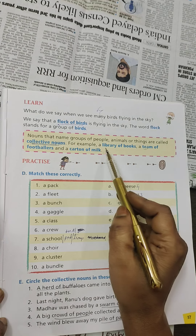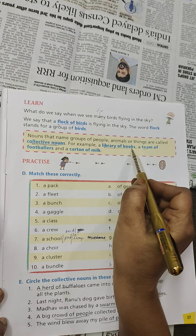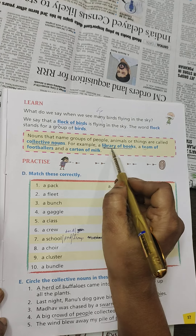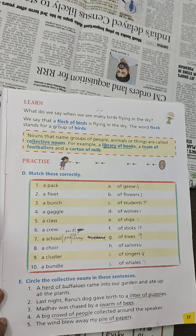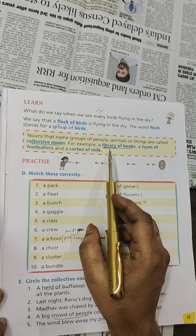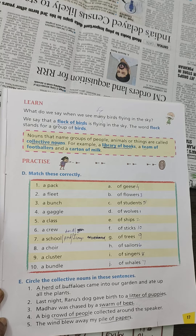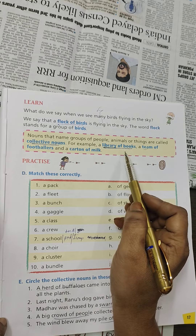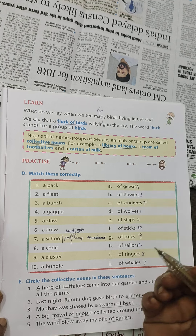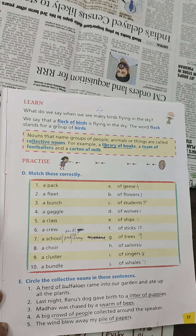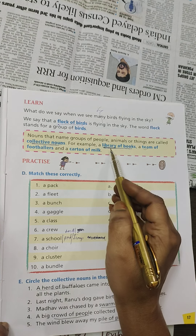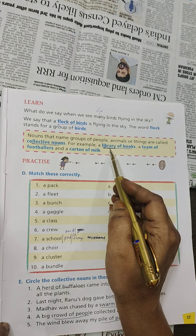For example, a library of books. Library means the place where we see many kinds of books. So library of books means a collection of different kinds of books — that is known as a collective noun. Library of books means collection of books, collection of magazines, collection of different kinds of books.